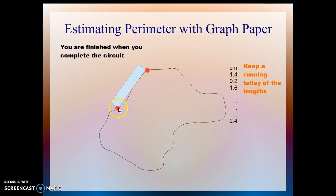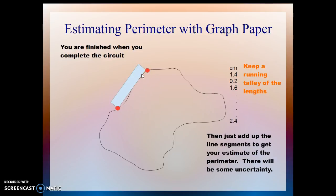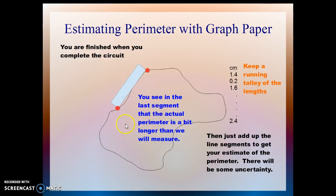Once you've completed the circuit — on this last one we just got tired and laid the ruler out, so we estimated this distance but cut off a little bit of the curve here and here. The last segment means the actual perimeter is a bit longer than we measured. You're going to add the line segments to get your estimate of the perimeter, and yes, there will be some uncertainty — uncertainty each time you move the ruler, and uncertainty from approximating the curves. That's just fine; you're getting an estimate and you'll be close enough.